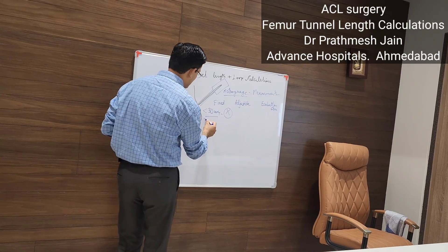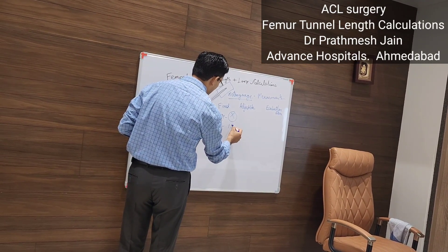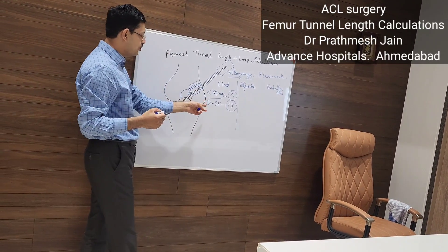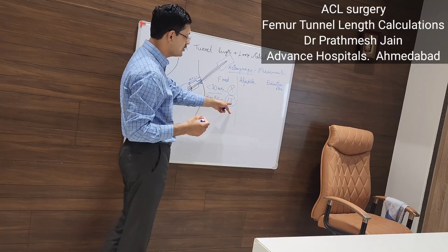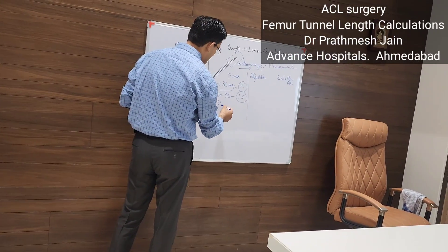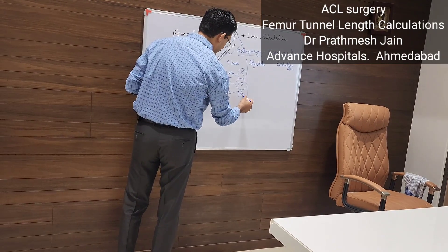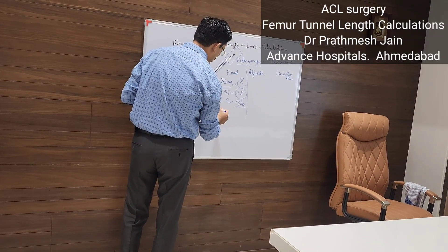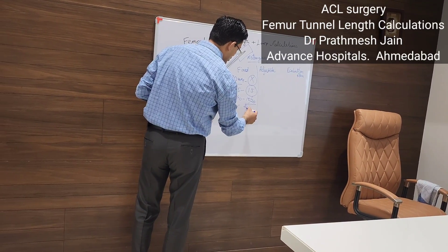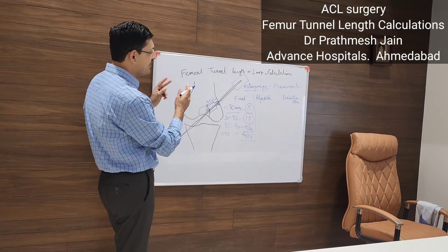For button size selection: if your tunnel length is 30 to 35 mm, use a 15 mm button. If the length is 35 to 40 mm, you can use either 15 or 20 mm. If the length is more than 40 mm, it is recommended to use either 20 or 25 mm.